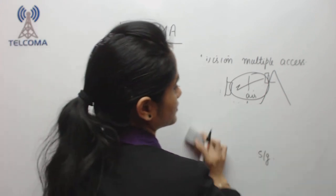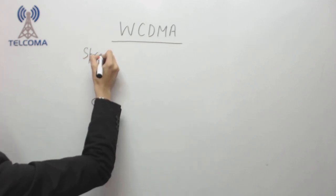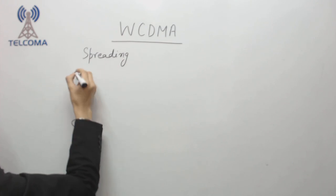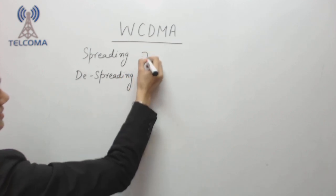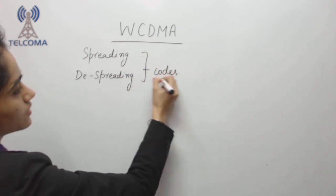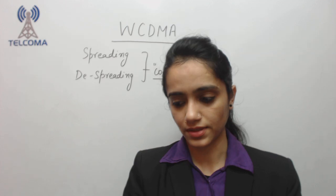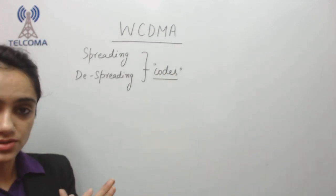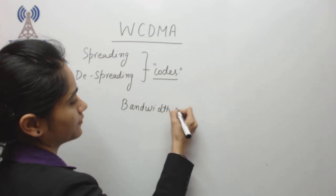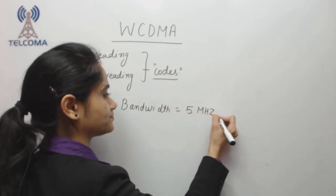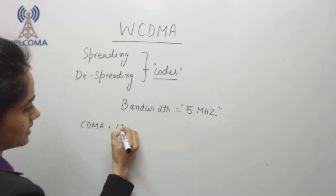The WCDMA concept used in 3G relies on spreading and despreading. For spreading and despreading we require some codes that allow us to spread and then securely despread the signal. Regarding bandwidth, 3G offers a bandwidth of 5 MHz, compared to CDMA which offers 1.25 MHz.